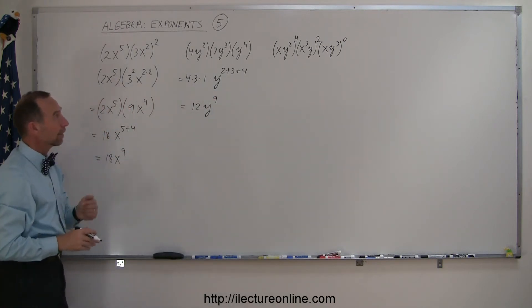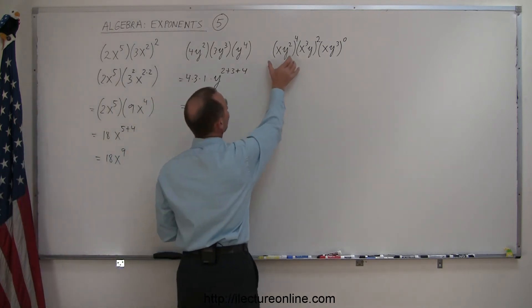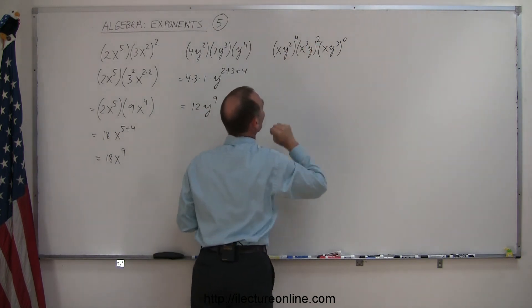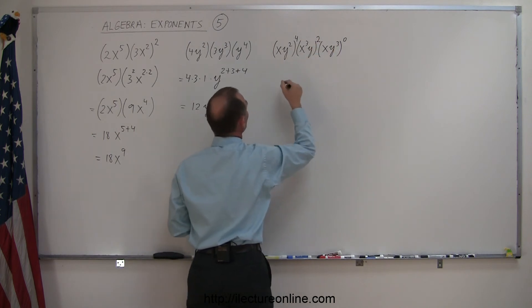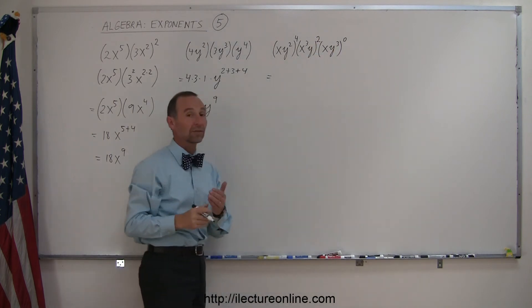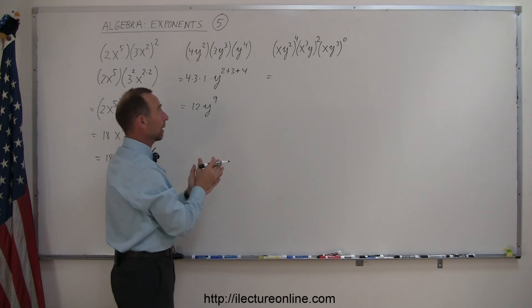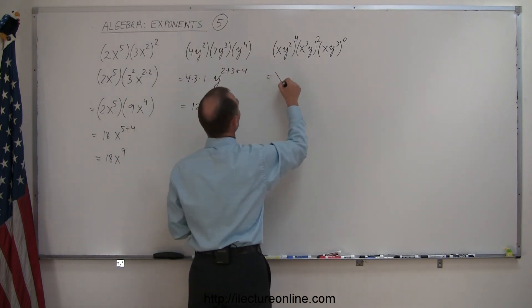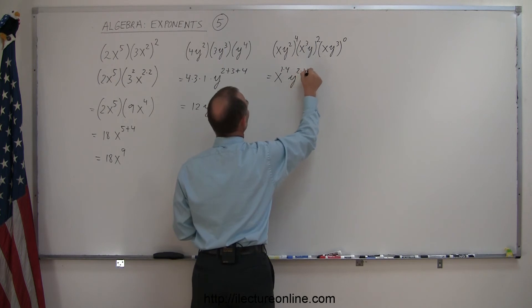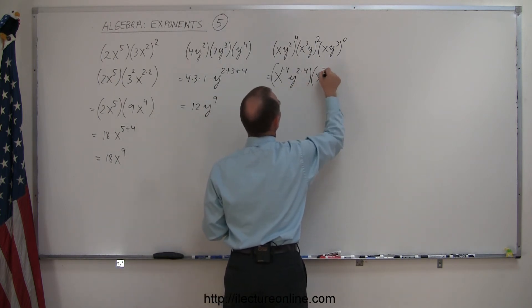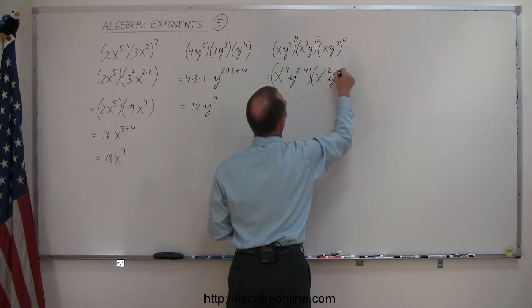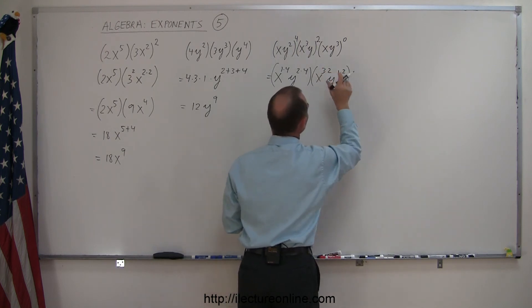Looking at our last example, notice here that each quantity inside of parentheses is raised to a power. So let's go ahead and apply the exponent up here to what's inside of parentheses. And again, remember, when we raise the exponent to exponent, we multiply exponents. So this is equal to x to the 1 times 4, y to the 2 times 4, multiply times x to the 3 times 2, y to the 1 times 2.